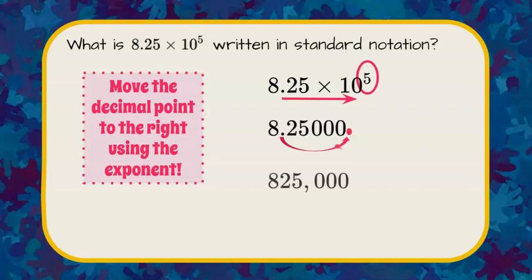And then I can rewrite it using a comma, and it becomes 825,000. So 8.25 times 10 to the 5th is equivalent to 825,000 in standard notation.